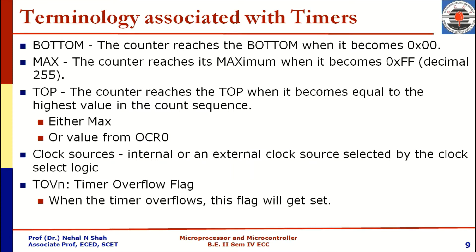First, let us understand terminology associated with timers. The first term is 'bottom' — when the counter reaches the bottom, which means it becomes 0x00. When the counter reaches its maximum value, which is 0xFF or 255 in decimal, we call it 'max'. The counter reaches the 'top' when it becomes equal to the highest value in the count sequence — either the maximum value 0xFF, or a value from the OCR register.